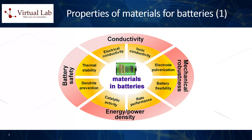When it comes to materials used for batteries and energy storage applications, several physical and chemical properties are important. Here are some of the key properties. First, energy density: energy density refers to the amount of energy a material can store per unit volume or mass. High energy density is desirable for batteries as it allows them to store more energy in a smaller space, which is crucial for applications like electric vehicles and portable electronics.